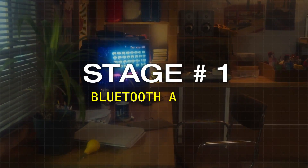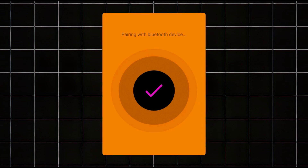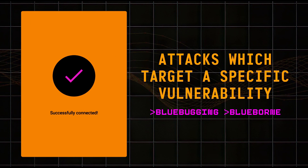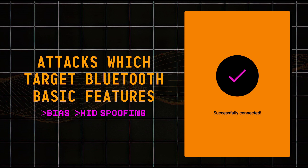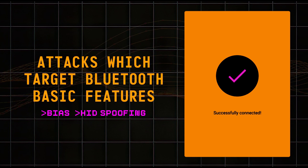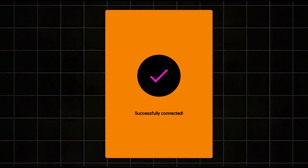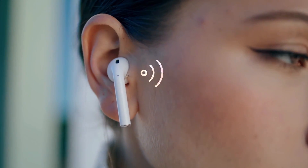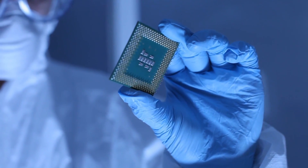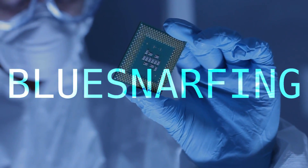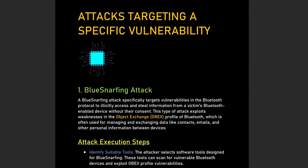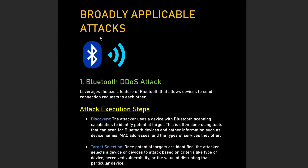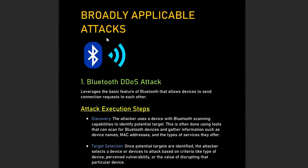Stage number one: Bluetooth attacks. When we talk about hacking Bluetooth devices, there are some attacks which target a specific vulnerability in certain devices, and then there are some others which are broadly applicable and target the basic features of Bluetooth technology. We'll only be focusing on the broadly applicable attacks that can be done on most devices. If you're also interested in learning about others like a BlueBugging or a BluesSnarfing attack, there's a PDF you can download via the link in the description, which also includes additional details about the practicality of some of the attacks covered here.